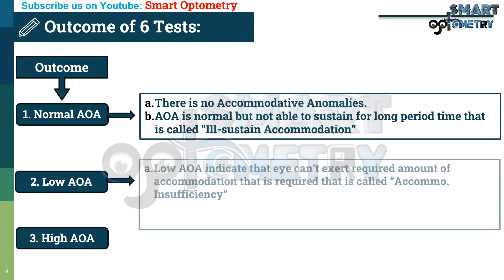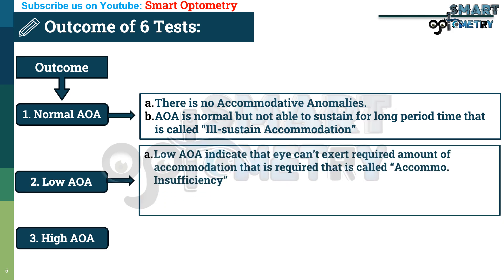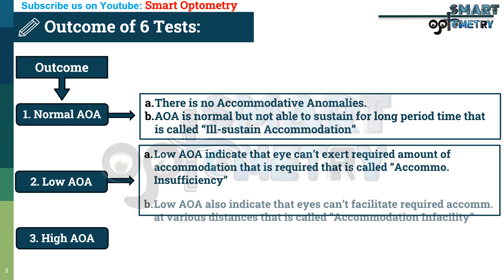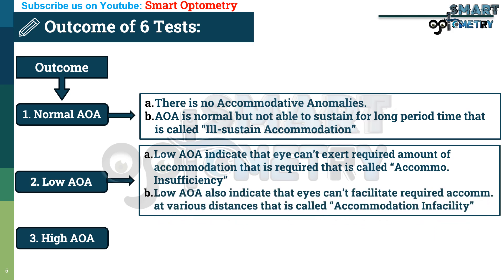When amplitude of accommodation is low, there are two possibilities. A: low amplitude of accommodation indicates the patient cannot exert the required amount of accommodation — that is called accommodation insufficiency. B: low amplitude of accommodation also indicates the patient cannot facilitate required accommodation at various distances — that is called accommodation infacility.